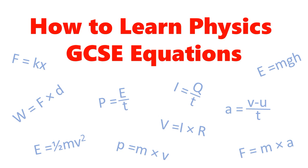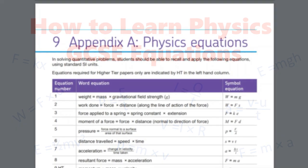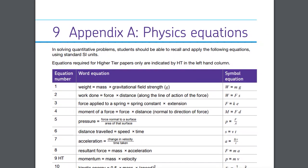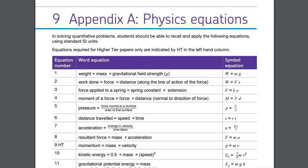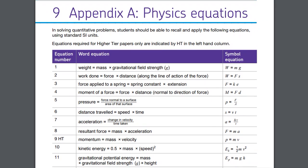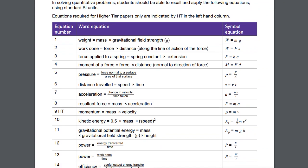Hi, GCSE Physics Ninja here. A lot of students have been asking me how to learn that big list of equations they need to remember for their GCSE physics exam. For example, here's an equations list from the AQA board. Notice all those symbols, quantities, and units that you have to get your head around as well. So what's the best way to learn equations?